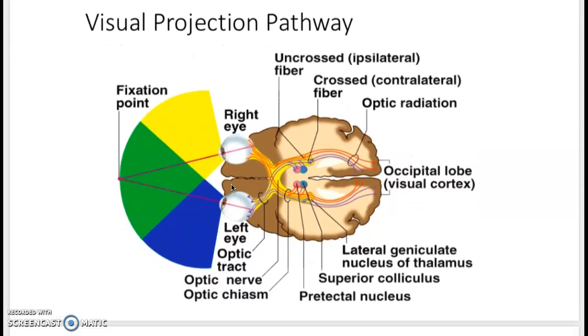Here we see the projection of information. Light comes into the right eye here, and you can see half of the signals go to the left side of the brain, and half of the signals stay on the right side of the brain. We call this hemidecussation. On the left side, same thing happens. Light comes in, half the information goes to the right side of the brain, half side of the information goes to the left side of the brain.